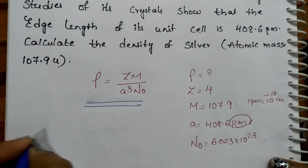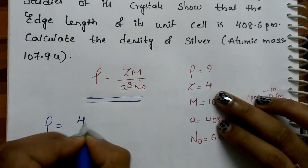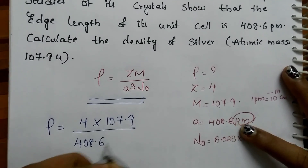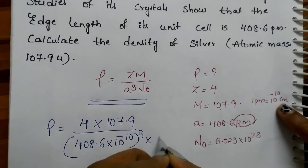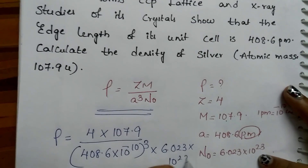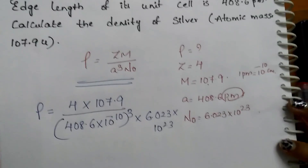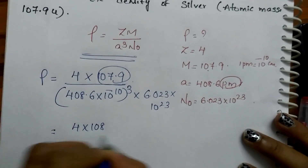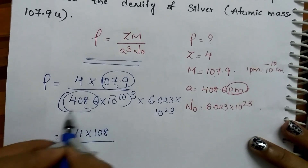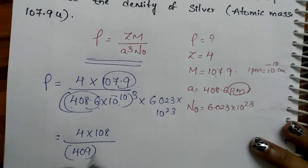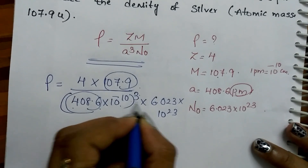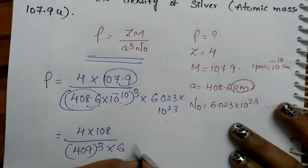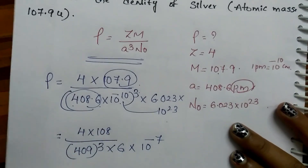Substitute the given data in the formula. You can do it so fast. Rho equals z value 4 times m which is 107.9, divided by a (408.6 × 10⁻¹⁰) cubed times N-naught (6.023 × 10²³). To calculate fast: round 107.9 to 108, so 4 × 108 = 432. Separate 408.6 as approximately 409, and write (409 × 10⁻¹⁰)³, giving 10⁻³⁰. Combined with 10²³ that gives 10⁻⁷. Round 6.023 to 6.